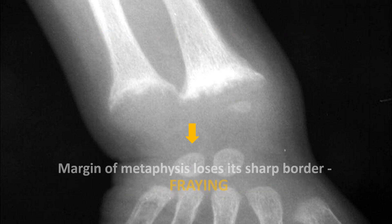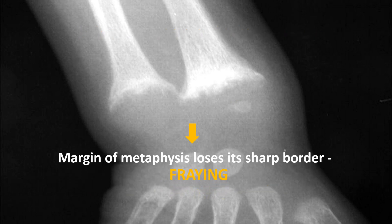The second x-ray change is that the margin of the metaphysis loses its sharp border. This is known as fraying. In this x-ray you can see the margins are frayed.